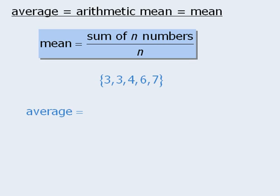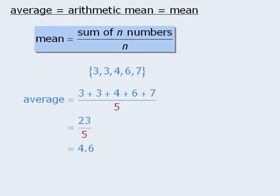For example, to calculate the average of these five numbers, we will find their sum, and then divide this by 5. When we simplify this, we see that the average, or mean, is 4.6.